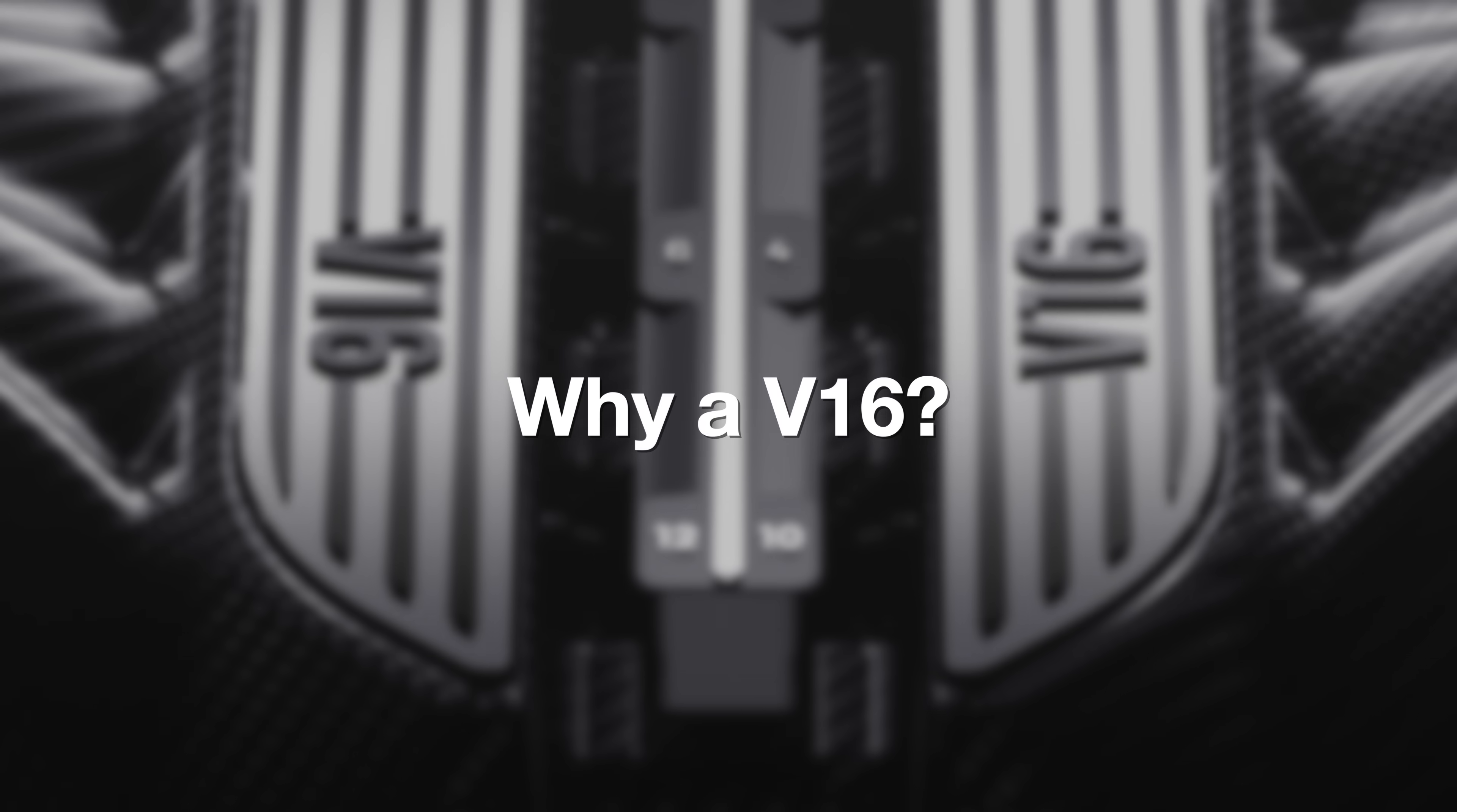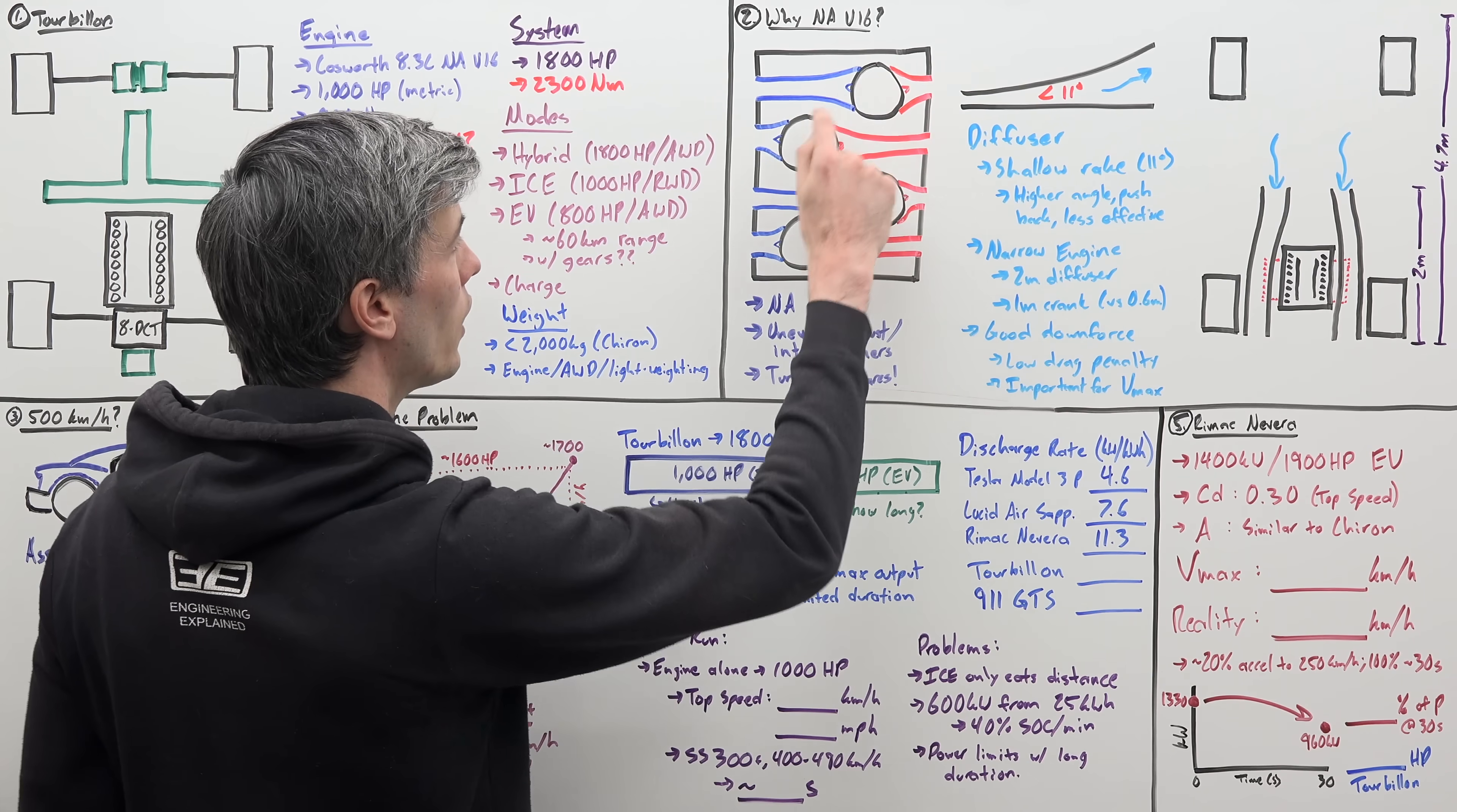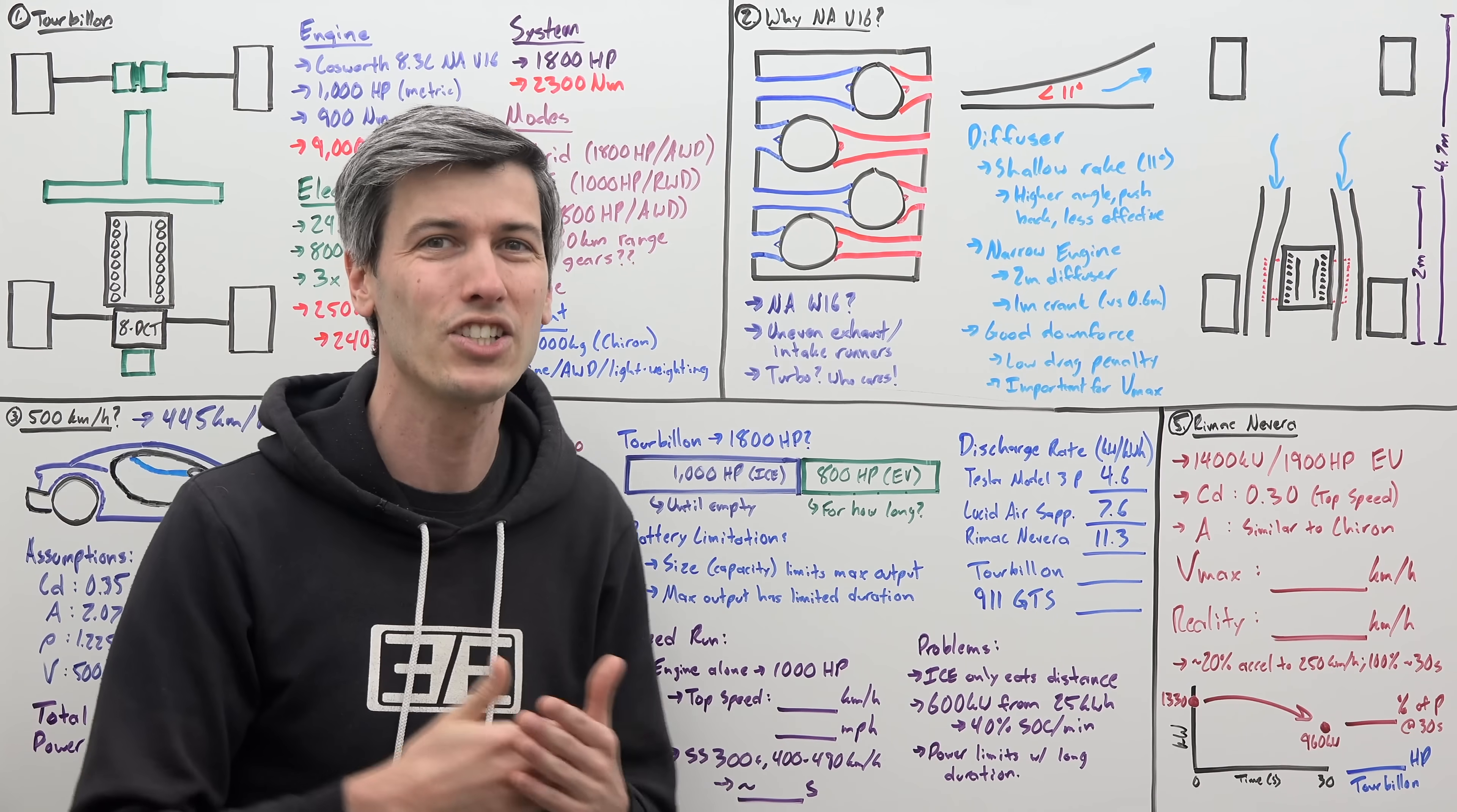But why a V16? Well, Bugatti actually did look into using a naturally aspirated W16 engine in order to continue to use that unique powertrain. But with a W16 engine, it doesn't work great with naturally aspirated as the induction style. Reason being, you are using VR blocks, and so you have your cylinders offset, which means your intake runners are in varying lengths, as well as your exhaust runners. And for a naturally aspirated engine, in order to get all of your pulses to line up and work out, for ideal pressure within your cylinders, you don't want to have these uneven runners. So as a result, we need to go to something different, like a V16.